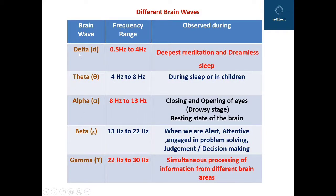The first wave is the delta wave, which has a frequency of 0.5 Hz to 4 Hz and is observed during the deepest meditation and dreamless sleep state of the brain. The next wave is the theta wave, which has a frequency of 4 Hz to 8 Hz and is observed during sleep or in children.